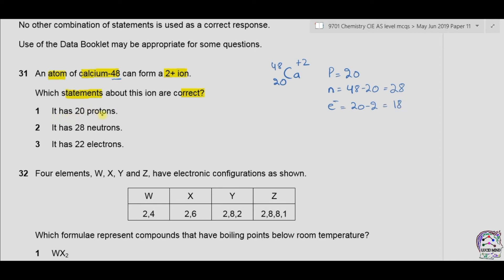Option 1. It has 20 protons. This is correct. Option 2. It has 28 neutrons. This is also correct. Option 3. It has 22 electrons. This is wrong. The answer is therefore B.